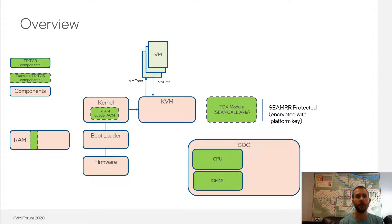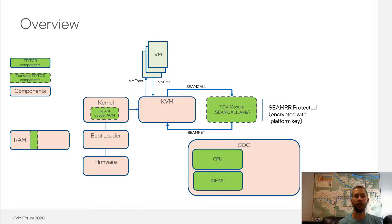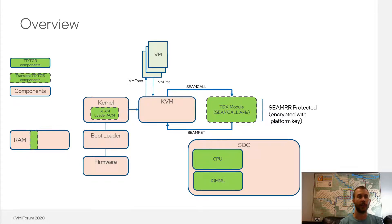At boot time, the kernel invokes the SeamLoader ACM, which loads the TDX module into memory, protected by the SeamRR, and also does some configuration of the TDX module during boot. Then at runtime, KVM executes SEAMCall to invoke APIs provided by the TDX module, and the TDX module executes SEAMRet to return control back to KVM.